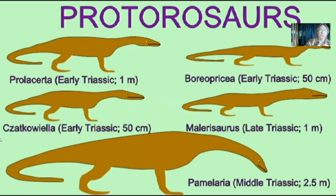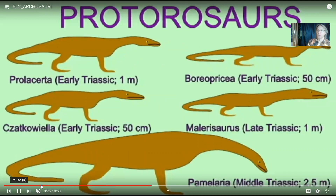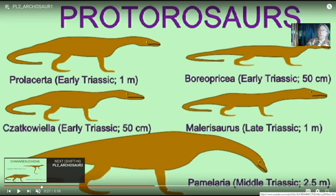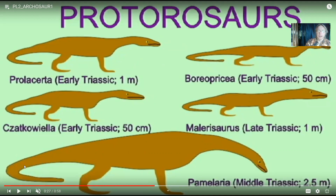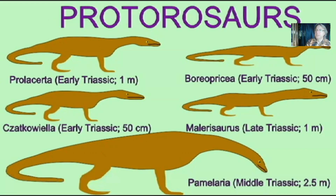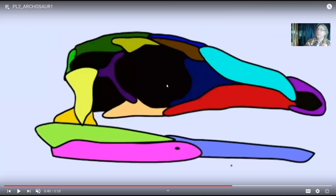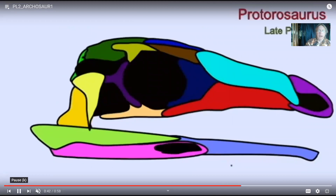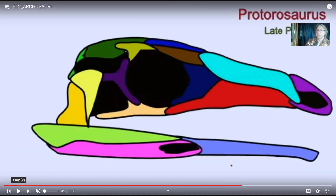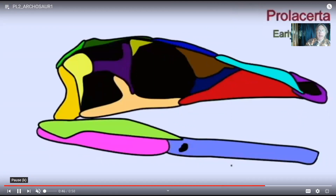Prior to there being archosaurs, there were archosauromorphs — more primitive forms, many from the early to mid-Triassic period. As we transition from basal diapsid reptiles into archosauromorphs and into true archosaurs, all the bones of the skull are the same, being related with similar skull bones that simply get modified as we go from the late Permian into the early Triassic.